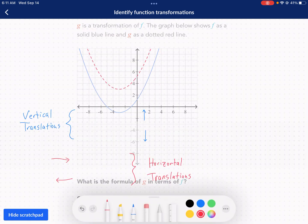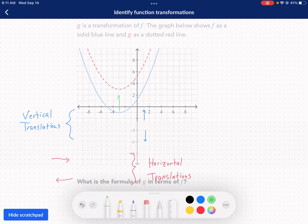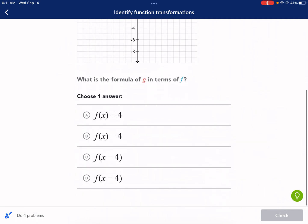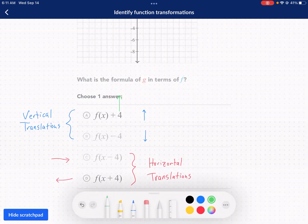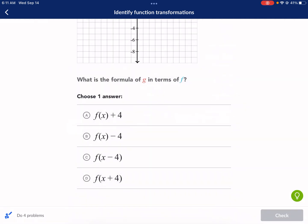So the transformation that's happening is this blue graph is getting moved up. So we need to figure out what that means. Here I have the different options. We have F of X plus four, minus four, and then F of X minus four in parentheses, which is different, and then F of X plus four in parentheses. What is the formula of G in terms of F? So how do we change F to get to G?